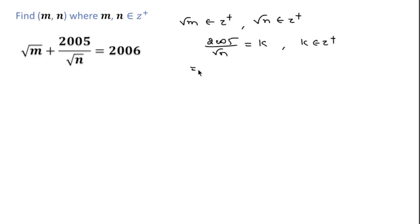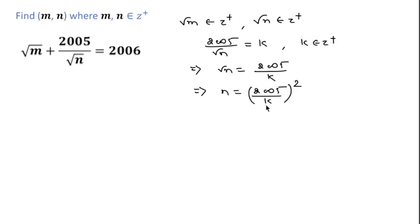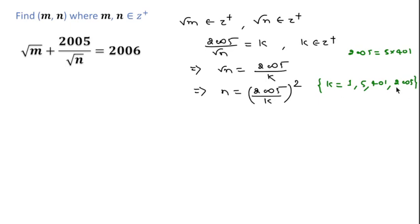This can be written as square root of n equal to 2005 over k, and if we square both sides then we get n equal to (2005/k)². Now, what will be the possible values of k? Since 2005 is a multiple of 5, and 2005 can be written as 5 × 401, the possible k values are 1, 5, 401, and 2005. We have to find only positive integer values, so these are the only possible values of k.